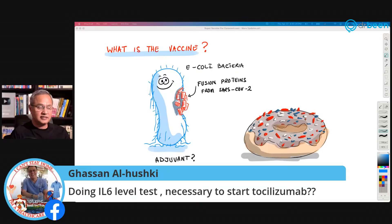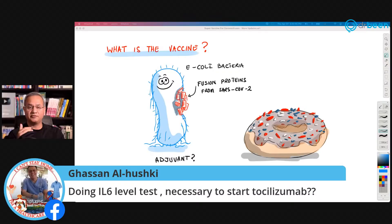Back to the question — is an IL-6 level test necessary to start tocilizumab? No. Clinically, if you feel the patient is showing signs of cytokine storm, you can start looking at interleukin-6 levels, which are necessary as the patient is in the ICU. But if you feel it may be happening, you start the drugs immediately. These are cases where you start management first and then do the labs.